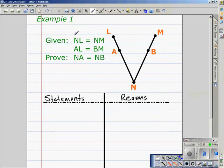We look at our first example today. We need to actually prove the measure of segment NA is equal to the measure of segment NB. With the given information, we're given that the measure of segment NL is equal to the measure of segment NM, and the measure of segment AL is equal to the measure of segment BM.